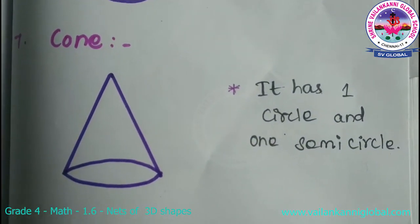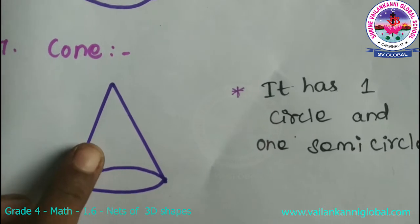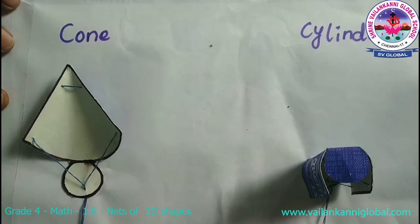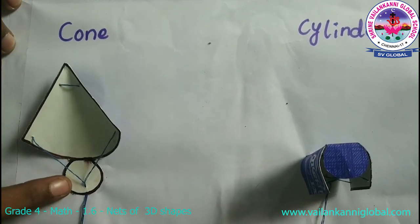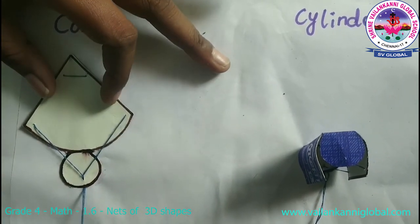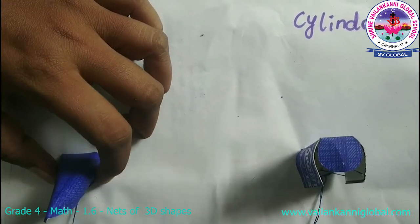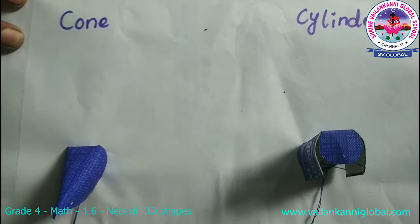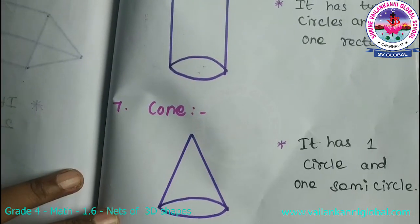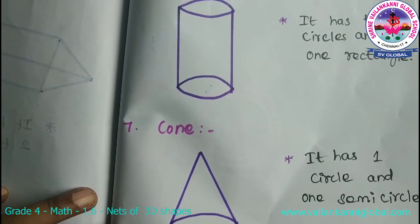At last, cone. For this cone, it has one circle and one semicircle. This is the net of cone — here one circle is there and one semicircle. Now we will make cone by using this net. See, it's a cone shape, it's a 3D shape. At last, the sphere shape is also there — for that sphere, there is no 2D shapes. It's not applicable.